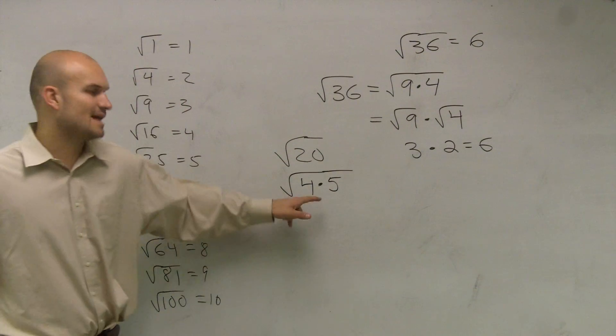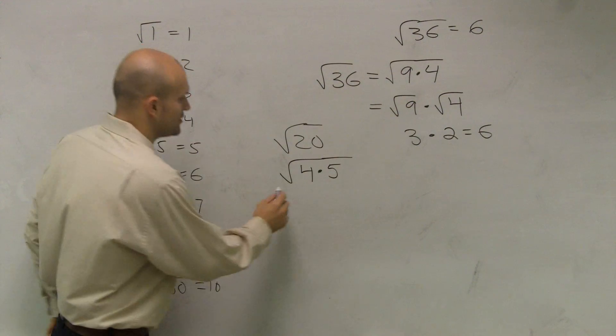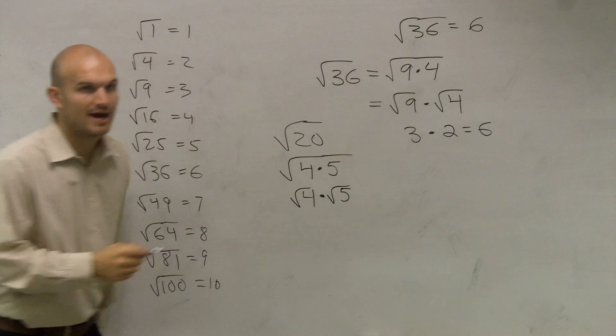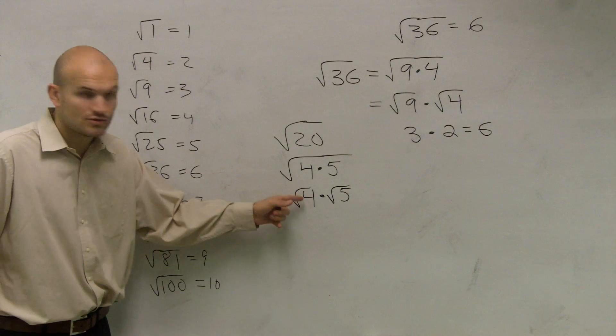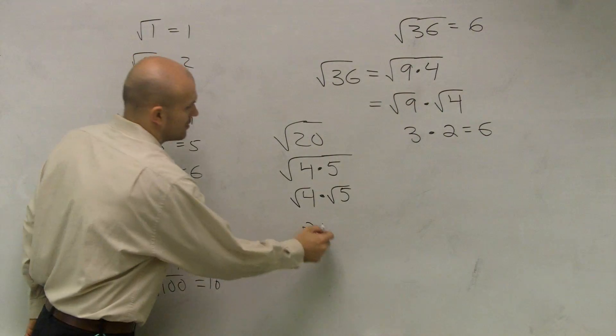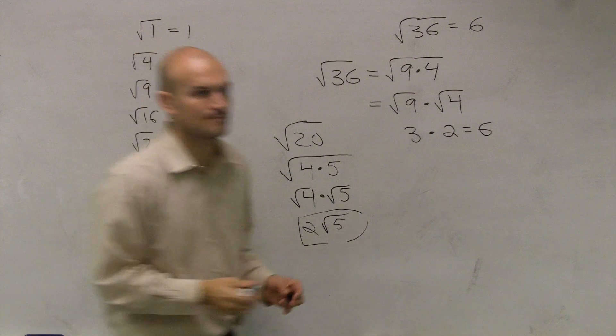And the reason why I got that out of there is I just rewrote this like I did here. I just rewrite it now as the square root of 4 times the square root of 5. Now, do I know what the square root of 4 is? 2. Do I know what the square root of 5 is? There's your answer. Okay?